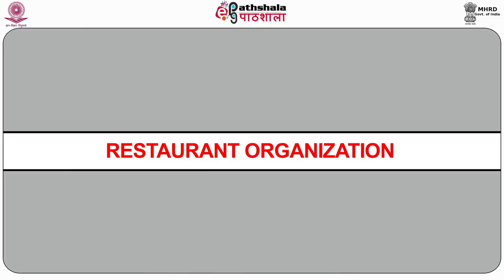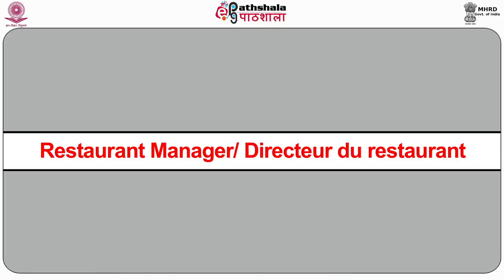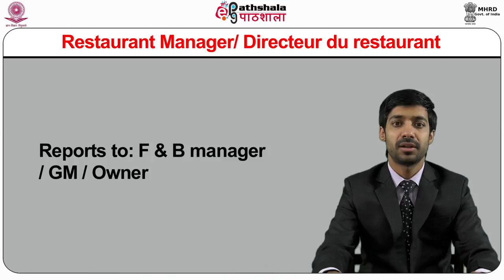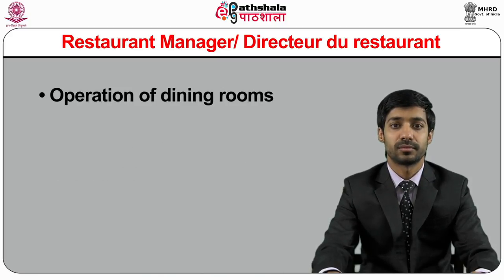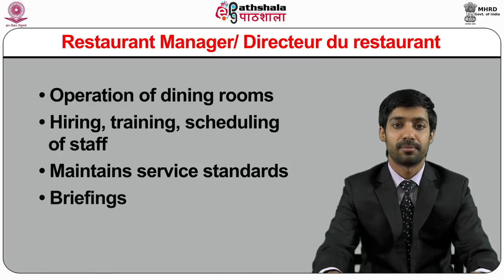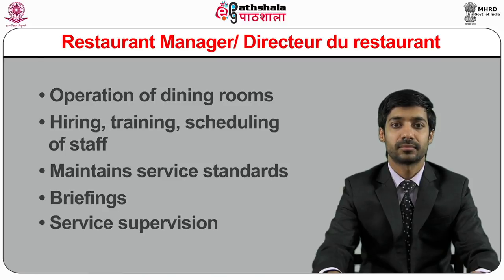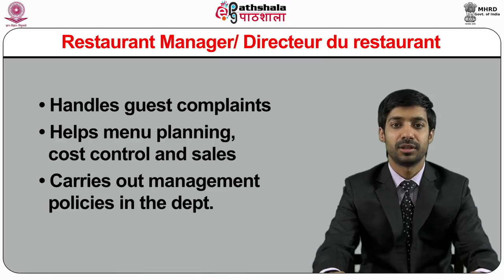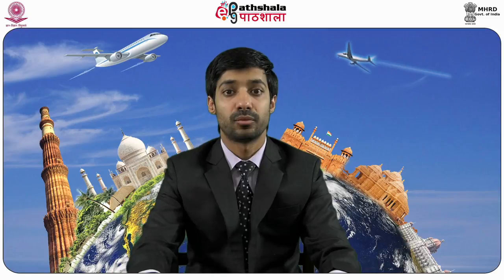In restaurant organization, the topmost person is the restaurant manager, or in French, director of the restaurant. He works under the F&B manager and reports to the assistant F&B manager, general manager, or in smaller organizations, the owner. He is responsible for the operation of dining rooms, hiring, training and scheduling of staff, maintaining service standards, taking briefings in absence of senior captain, handling guest complaints, menu planning, cost control, and sales. He carries out management policies in the outlet.